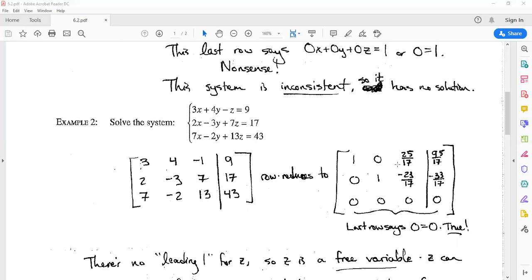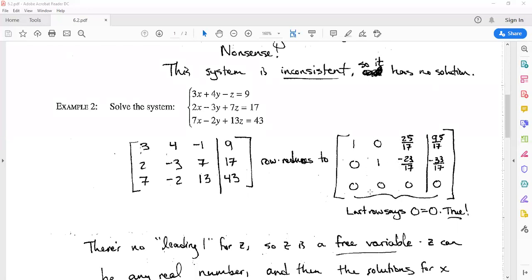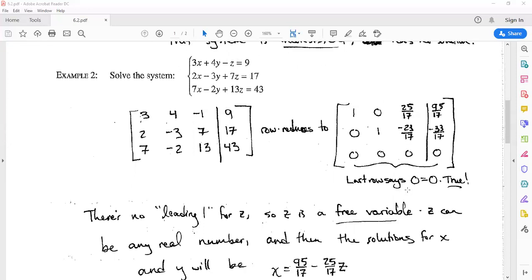Notice here that we've still got some extra stuff on the left side of the bar here. What's really going on? This last equation, if we read it out again, really says 0x plus 0y plus 0z equals 0. That says 0 equals 0, which we know is definitely always true. But notice that we don't have a leading one here in this row—we don't have a leading one for z. What that really means is that z is what's called a free variable.